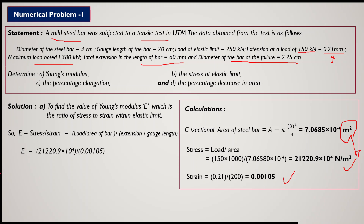Young's modulus of elasticity = stress / strain within the elastic limit. Using the values we calculated for stress and strain, after calculation we get Young's modulus ≈ 10 × 10¹⁰ N/m². Converting to gigapascal, where 1 GPa = 10⁹ Pa, gives the value of Young's modulus in GPa — consistent with values discussed in earlier lectures where we noted that practical engineering uses larger units.